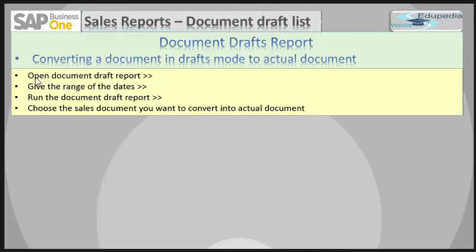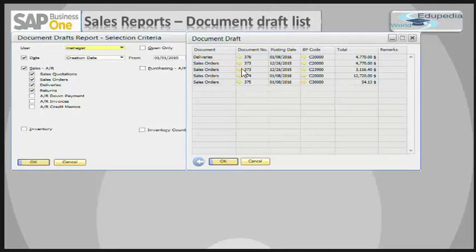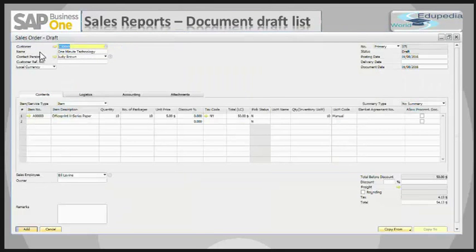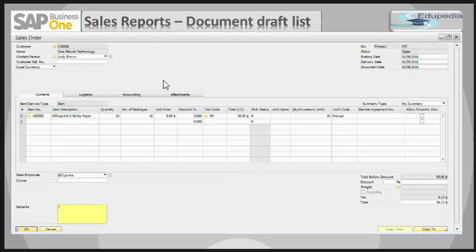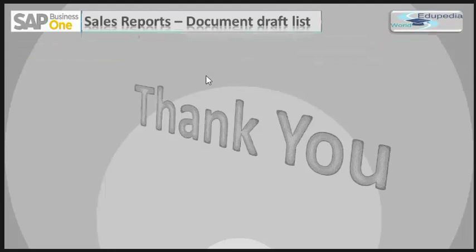To convert a document from draft mode to an actual document: open the Document Draft report, give the date range, run the report, and choose the sales document you want to convert. Here I have given a date range, selected sales order draft number 375, clicked Add, and you can see it is now added within the system. In the next session we will be seeing about the Sales Analysis report. Thank you.